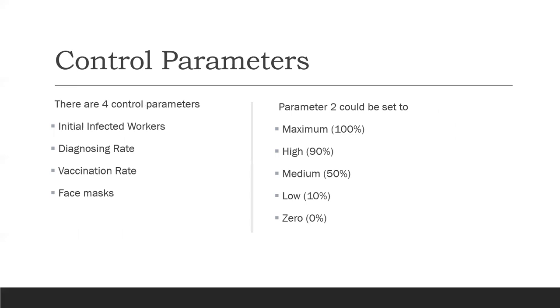Let me explain the control parameters in depth. The observer has the ability to input a number of initially infected workers to the factory. So when an observer inputs a number as initially infected workers, you could observe a difference in the behavior inside the factory when it comes to infection rates and diagnosing rates.